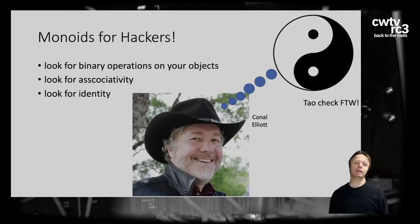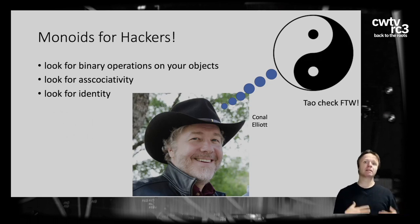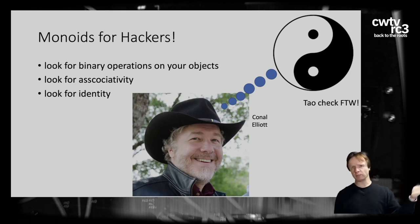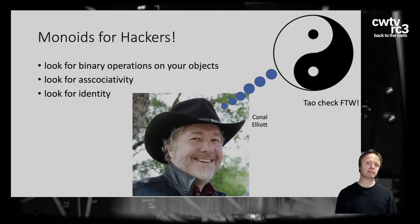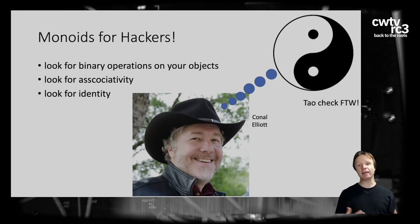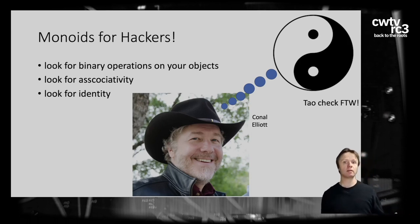My friend Conal Elliott has elevated this to a general design principle: whenever you write software for a particular domain, look for mathematical algebraic structure. Because monoids are so common, one thing you can always try is look for a binary operation on your objects, check if the associative law holds, and look for an identity. If it's not associative, that's maybe a sign you should try to make it associative — it doesn't always work but frequently does. Colin calls this a 'tao check'.